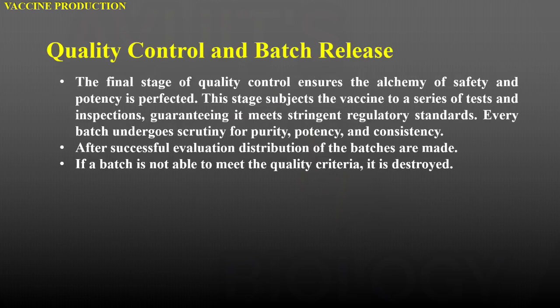The final stage of quality control ensures the safety and potency of the vaccine is perfected. This stage subjects the vaccine to a series of tests and inspections, guaranteeing it meets stringent regulatory standards. Every batch undergoes scrutiny for purity, potency, and consistency. After successful evaluation, distribution of the batches is made. If a batch is not able to meet the quality criteria, it is destroyed.